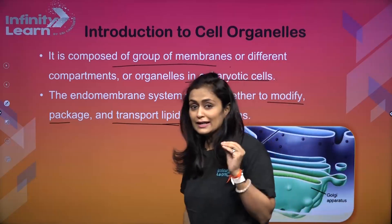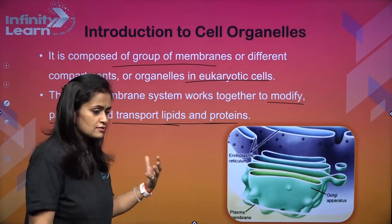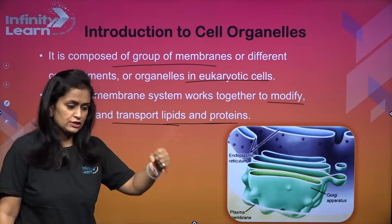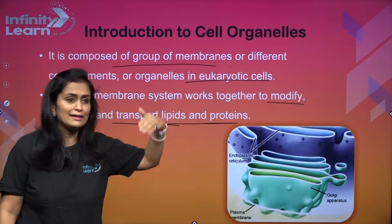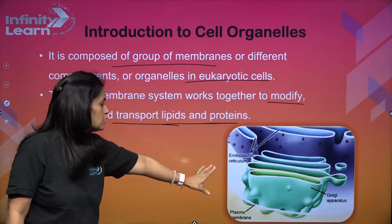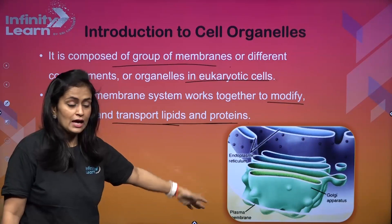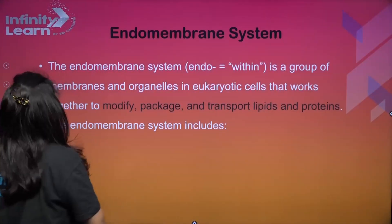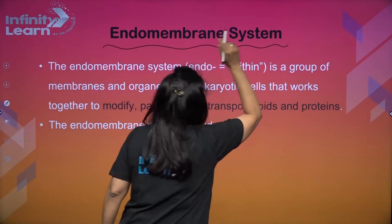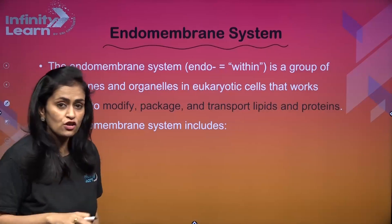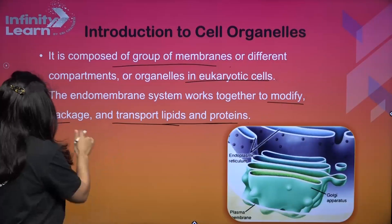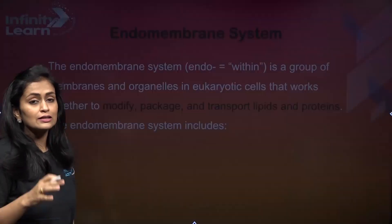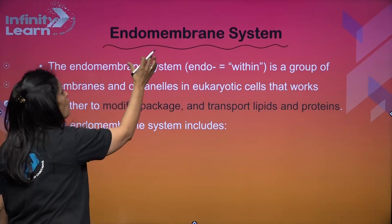That's why I told you it's like an industry. In an industry, if synthesis is happening and they are producing a certain kind of material, it has to be quality checked, packed, modified, and then sent to the customer end-to-end. Similarly, inside a cell, synthesis is happening and delivery is also happening — so there should be a connection. All those organelles that are connected in modification, synthesis, packaging, and transportation are working together. That system is called the endomembrane system.